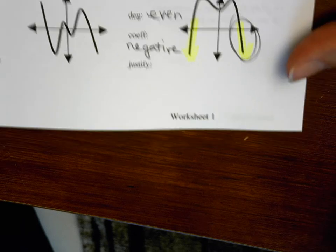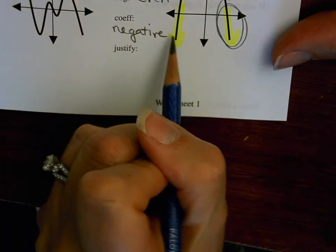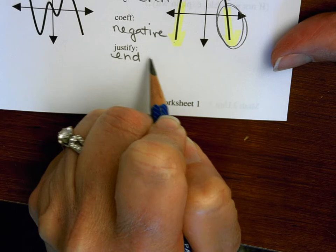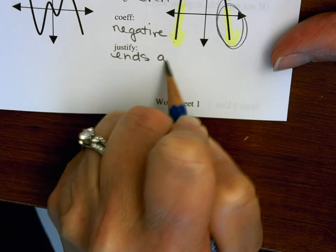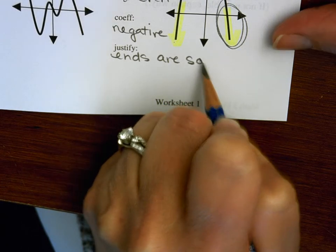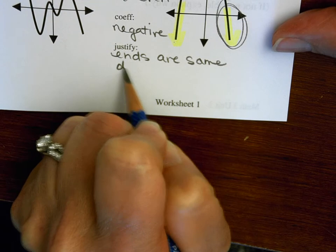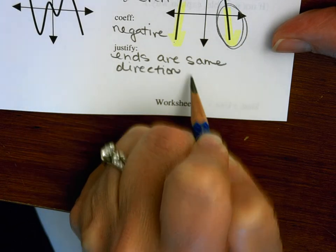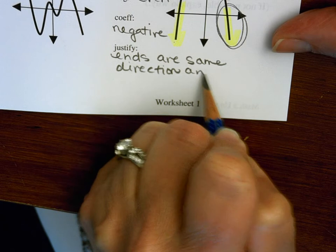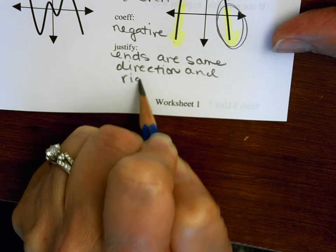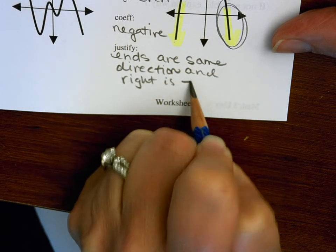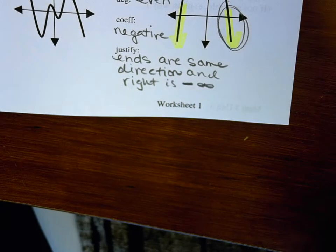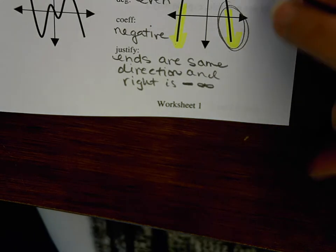To justify: the ends are going in the same direction, which gives us the even degree. The right side is going to negative infinity, so the negative leading coefficient tells me my coefficient is negative.